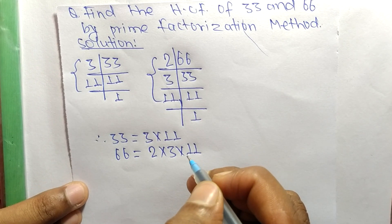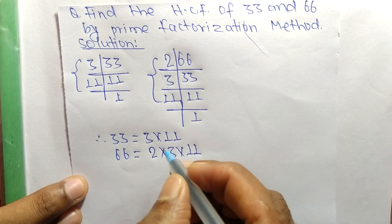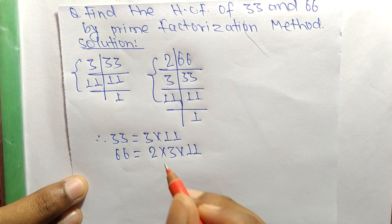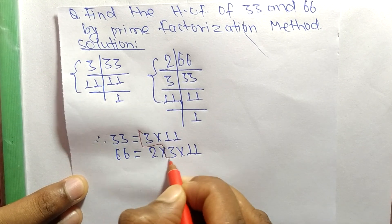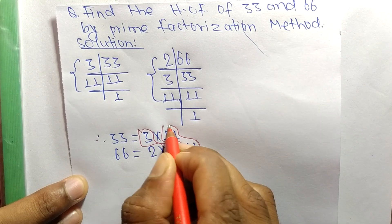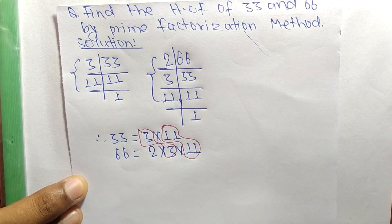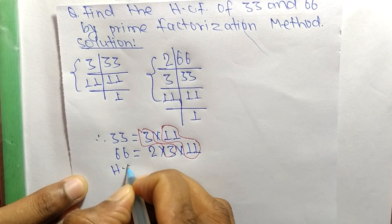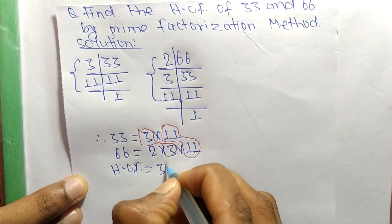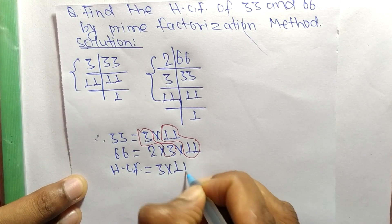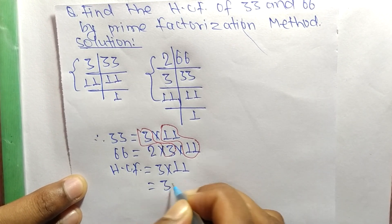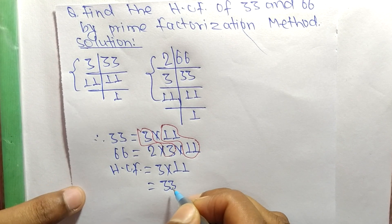...11. So from these prime factors we find out the common factors. The common factors are 3 and 11. So the HCF is equal to 3 times 11, which equals 33.